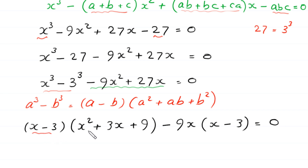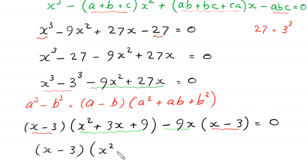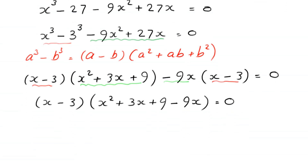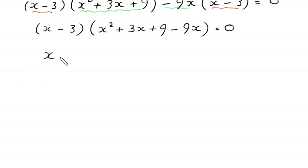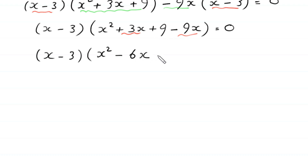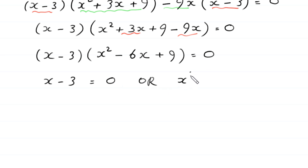As you can see, the expression (x minus 3) is common, so we factor it out. In the bracket we have x squared plus 3x plus 9 minus 9x, which simplifies to x squared minus 6x plus 9. So the equation becomes (x minus 3)(x squared minus 6x plus 9) equals 0.